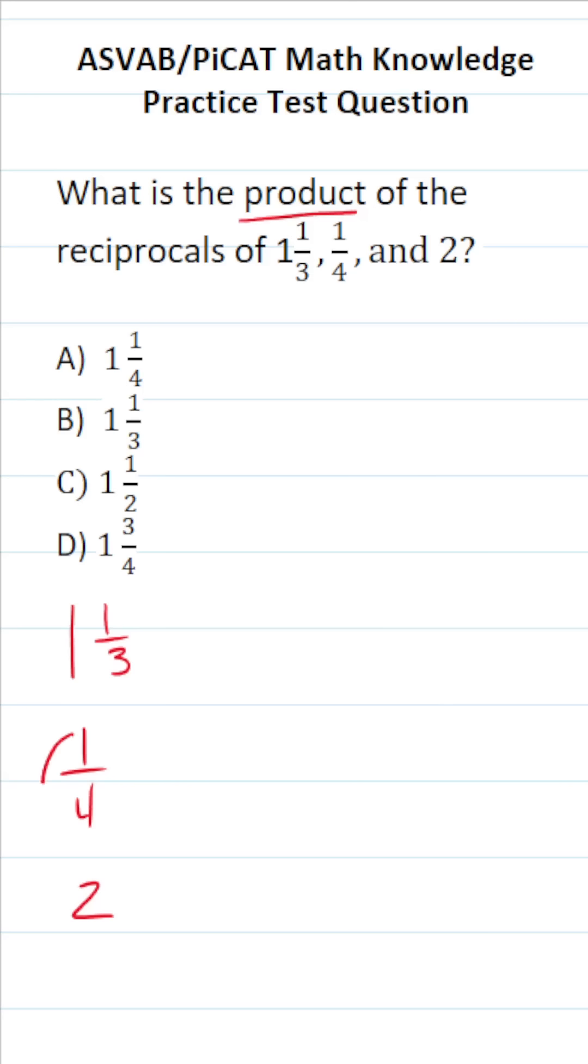To find the reciprocal of 1/4, you just exchange its numerator and denominator. So in other words, the reciprocal of 1/4 is simply 4 over 1. I'm going to put a box around it to remind me that that is, in fact, a reciprocal that I'll eventually be multiplying with these other reciprocals.